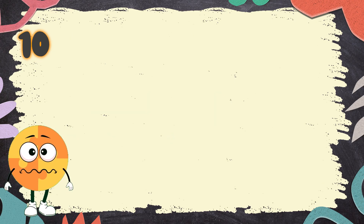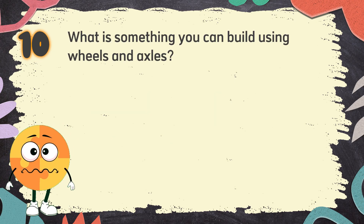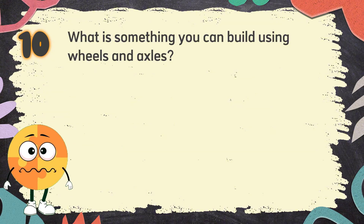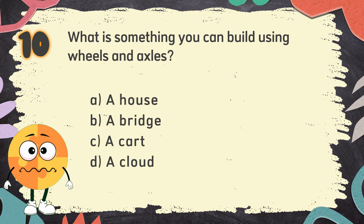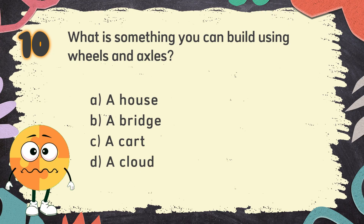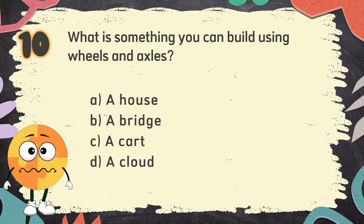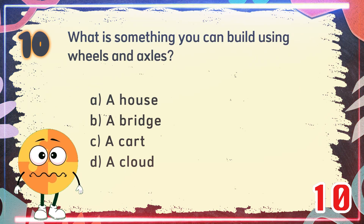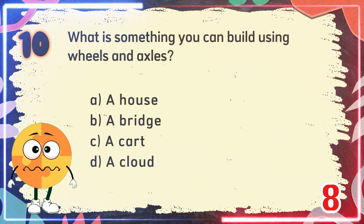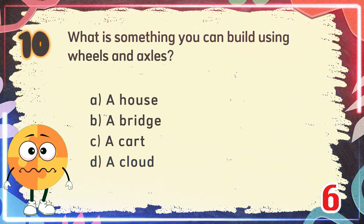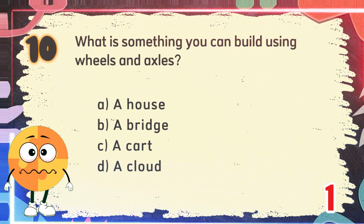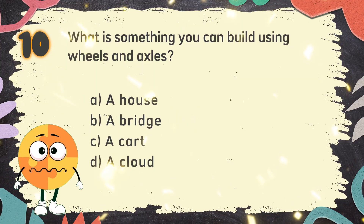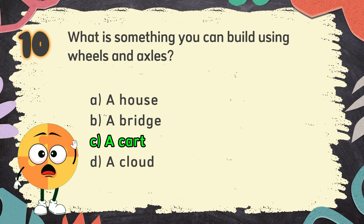Number 10. What is something you can build using wheels and axles? The choices are: A. A house. B. A bridge. C. A cart. D. A cloud. The correct answer is C. A cart.